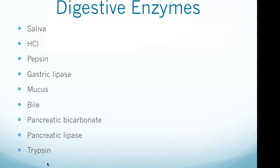Saliva: the origin is the salivary glands, which means the mouth. Its function is to lubricate the mouth, break down carbohydrates and starch through salivary amylase, and break down fats through salivary lipase. Hydrochloric acid: origin is parietal cells, meaning the stomach. Its function is to sterilize potentially harmful bacteria and convert pepsinogen to pepsin. Pepsin: origin is chief cells, meaning the stomach. It digests protein by breaking bonds of amino acids.